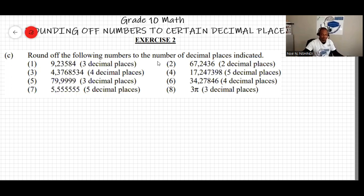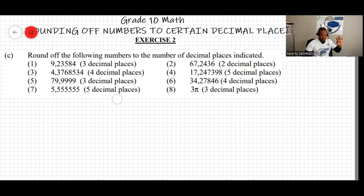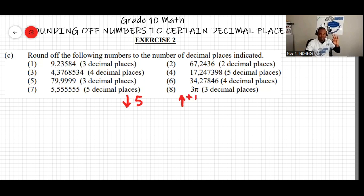The next exercise is to round off the following numbers to the indicated number of decimal places. When they say three decimal places, you look at the fourth decimal digit. The rule is: if that digit is less than 5, drop it and all remaining digits. If it is 5 or more, increase the third decimal digit by one.